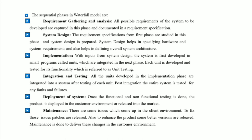The sequential phases in the waterfall model are: first, requirement gathering and analysis — all possible requirements of the system to be developed are captured in this phase and documented in a requirement specification. Second, system design — the requirements specifications are studied and system design is prepared, which helps in specifying hardware and system requirements and also helps in defining the overall system architecture. Third, implementation — with inputs from system design, the system is first developed in small programs called units which are integrated in the next phase.